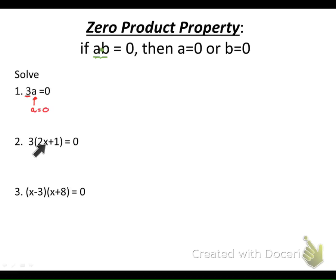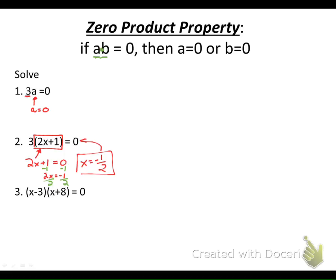If we extend that to this second example, it's not three times a, it's three times the binomial two x plus one. If three times some value is zero, we know that this value of two x plus one has to be zero by the zero product property. So I can set that factor equal to zero and solve it. I subtract one from each side to get two x equals negative one, then divide by two on each side, and I end up with x equals negative one-half.